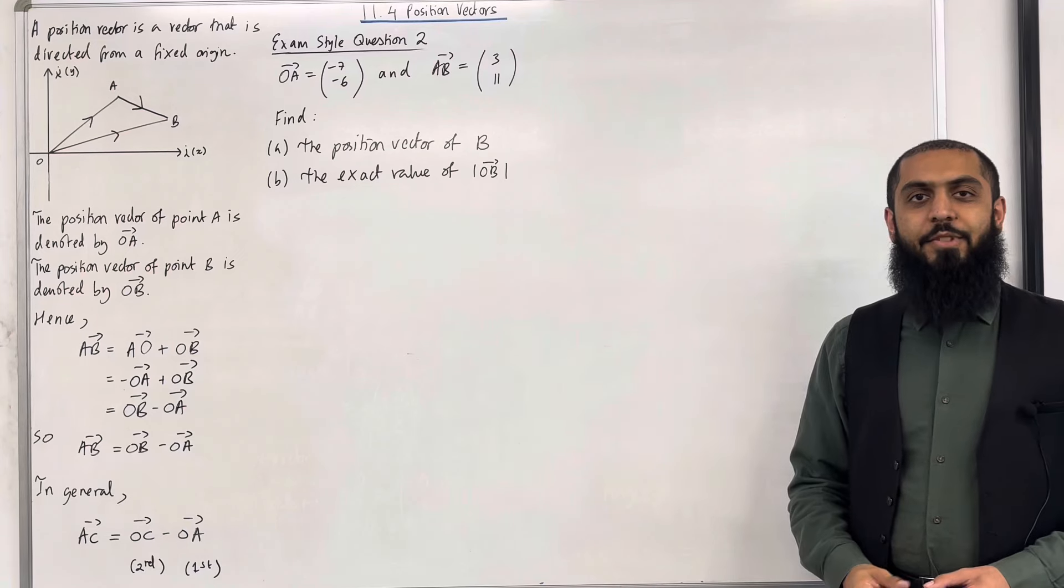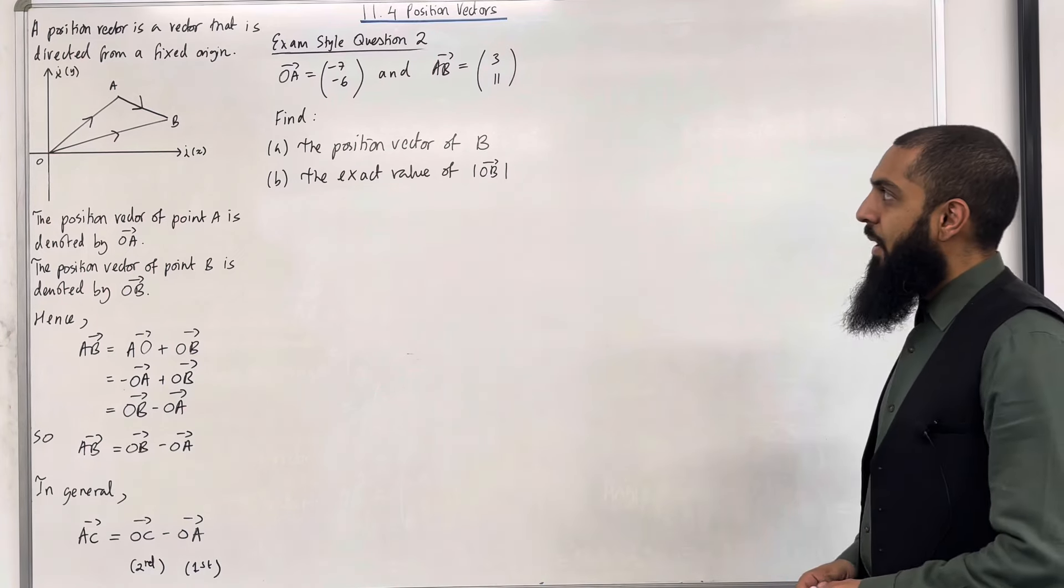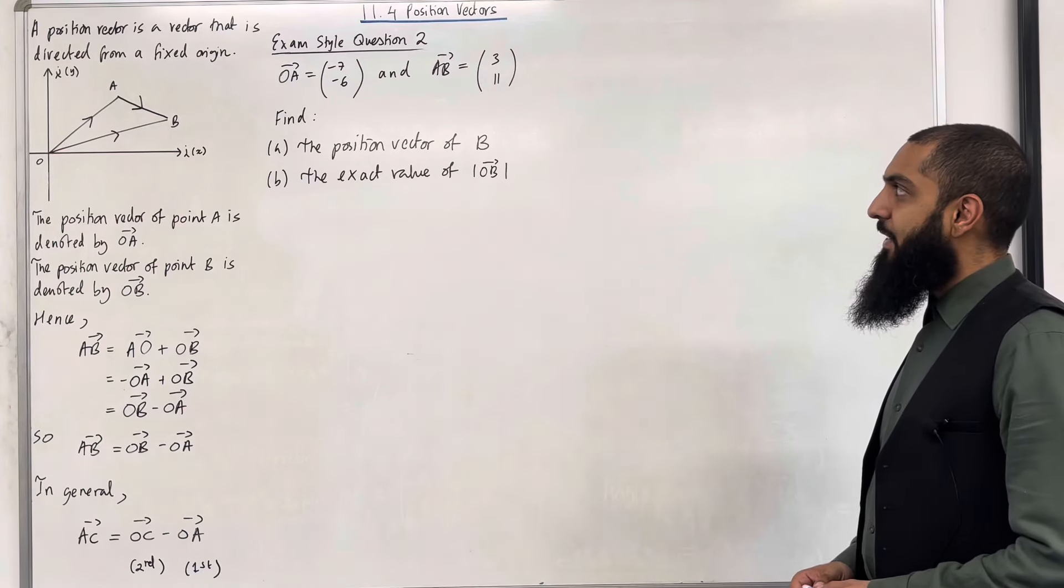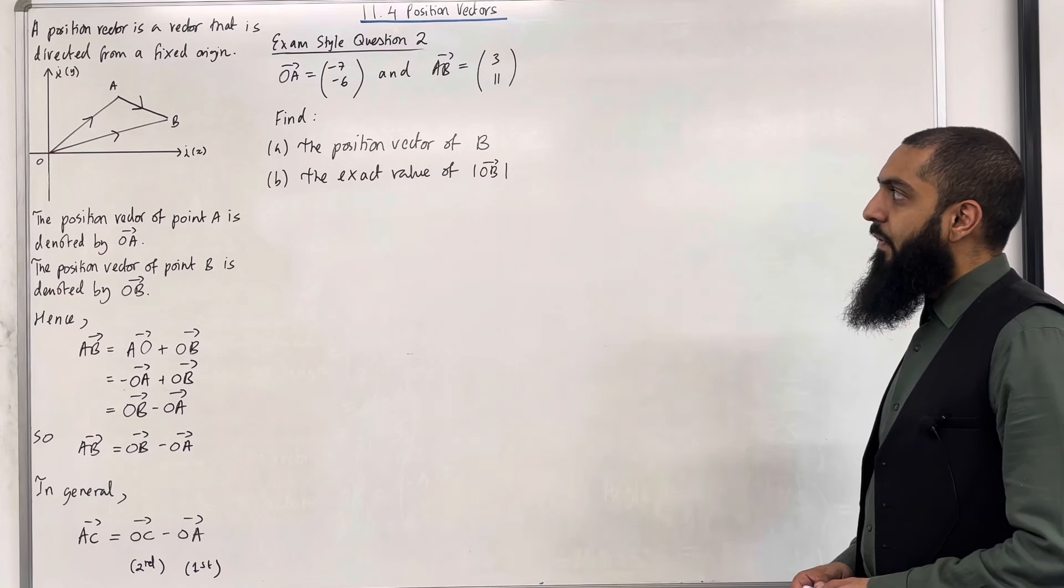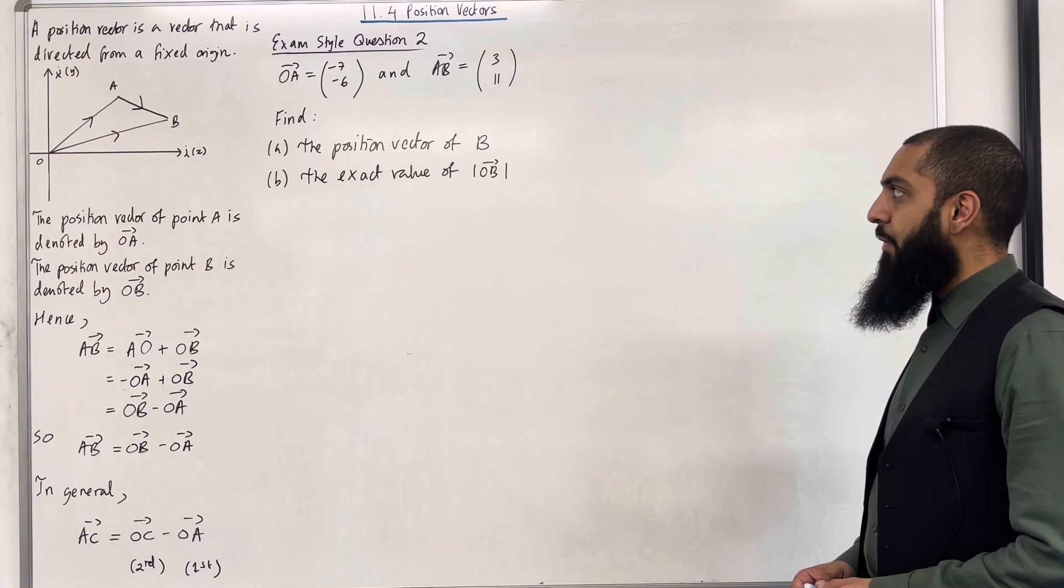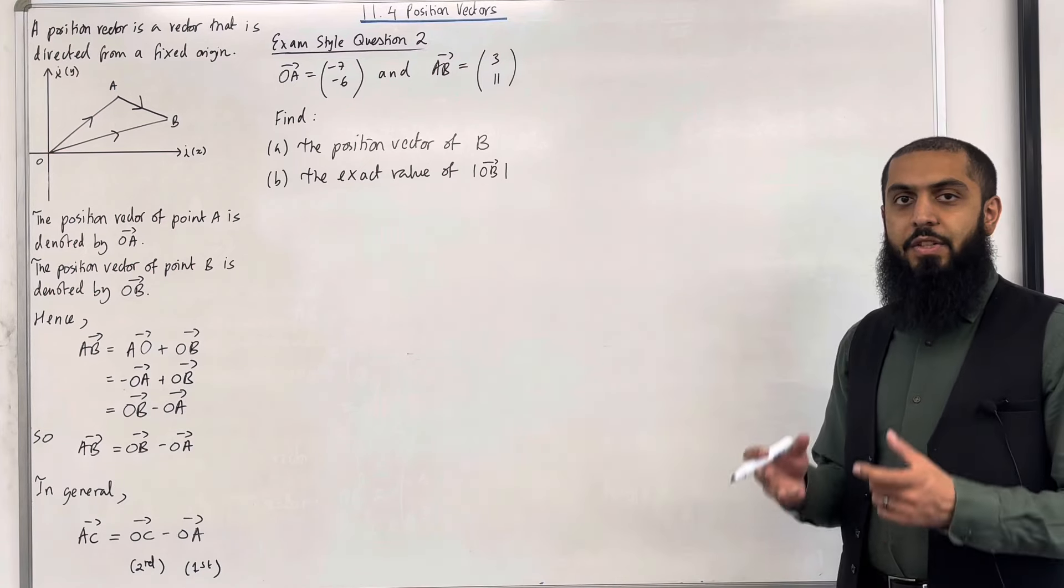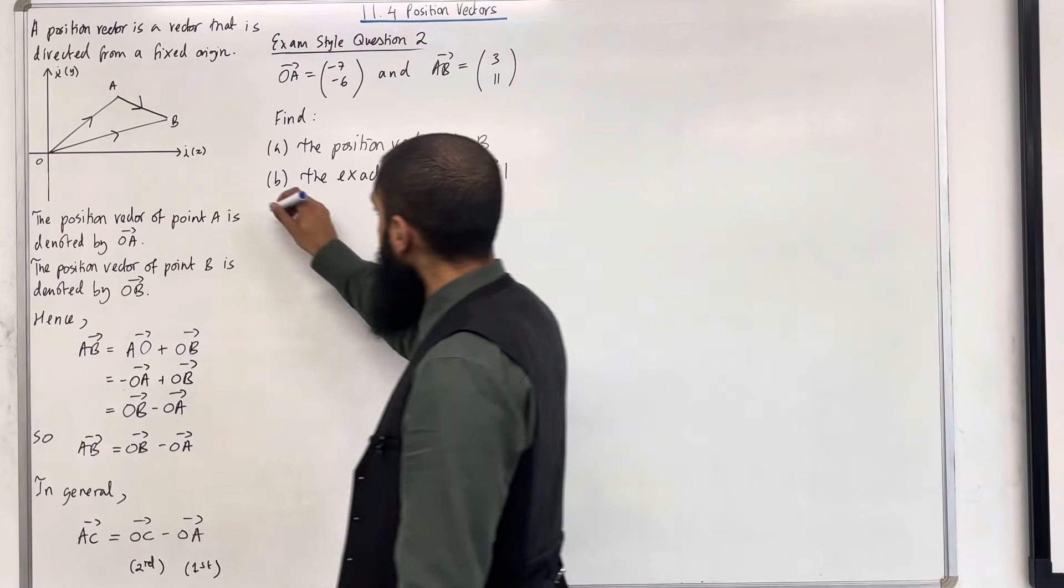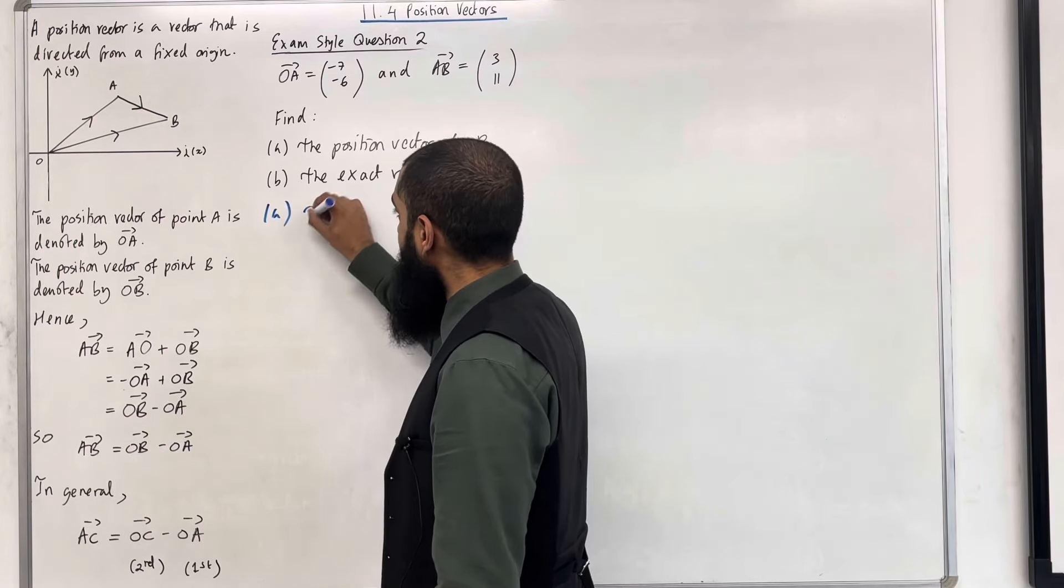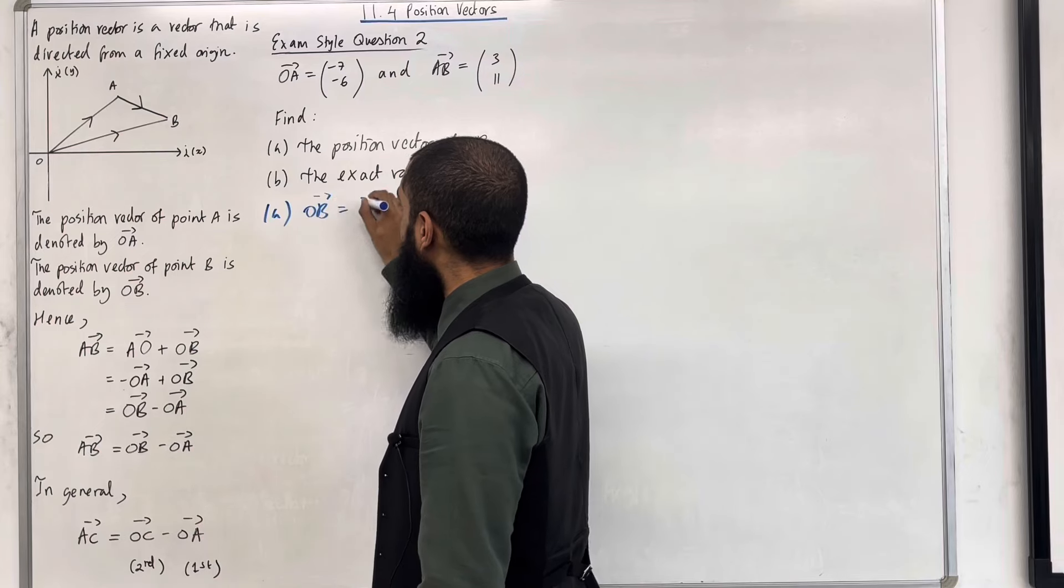Moving on to exam style question 2. The vector O to A is equal to minus 7 and minus 6. And the vector A to B is equal to 3 and 11. Find part A, the position vector of B. The position vector of B is denoted by O to B. So in part A, we want to work out the vector O to B. That is our target.